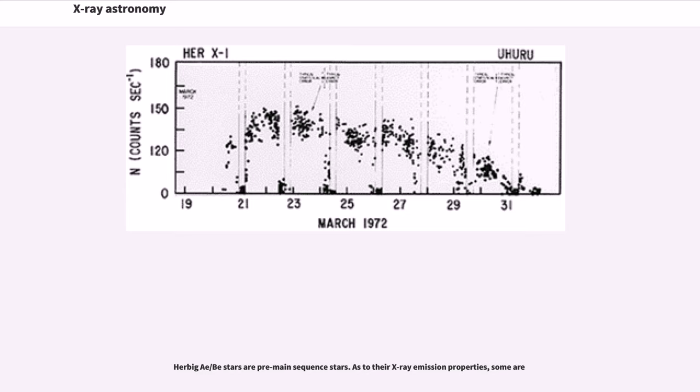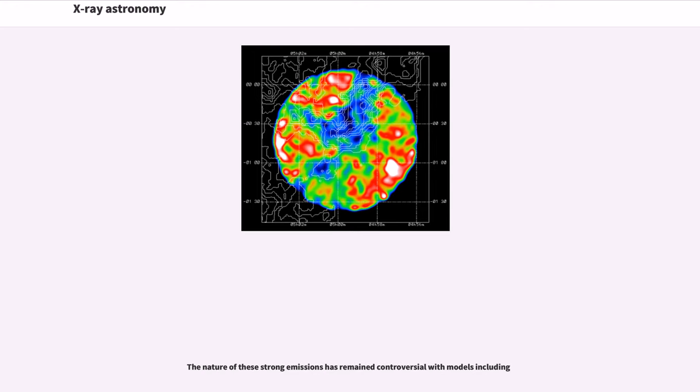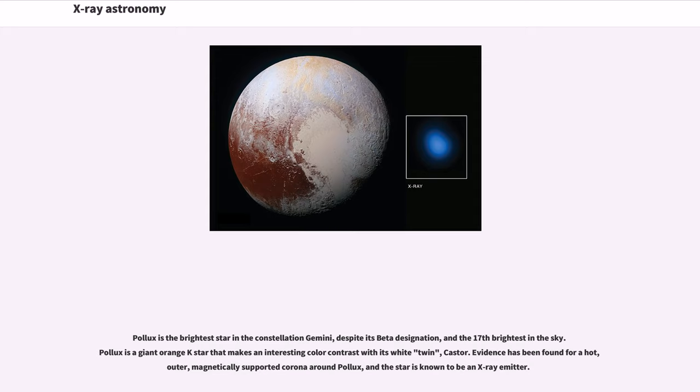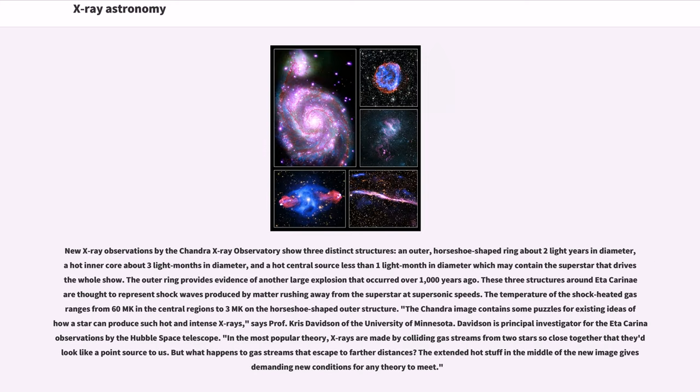Herbig A/B stars are pre-main sequence stars. The FK Com stars are giants of spectral type K with an unusually rapid rotation and signs of extreme activity. Their X-ray coronae are among the most luminous and the hottest known with dominant temperatures up to 40 MK. Pollux is the brightest star in the constellation Gemini and the 17th brightest in the sky. Evidence has been found for a hot, outer, magnetically supported corona around Pollux, and the star is known to be an X-ray emitter.